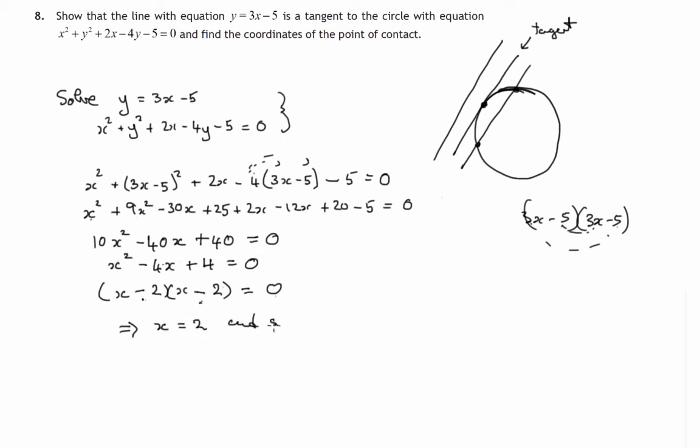And since there is only one solution, the line y equals 3x minus 5 is a tangent. We have this situation: one point only where the line meets the circle.